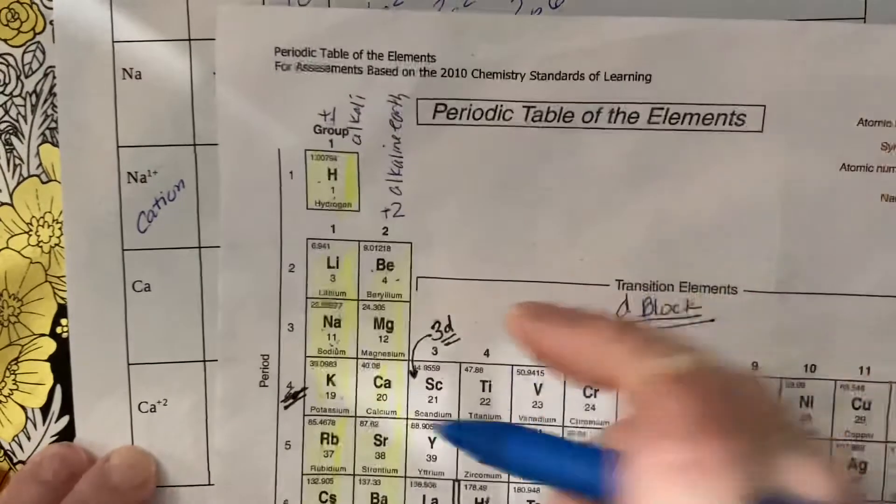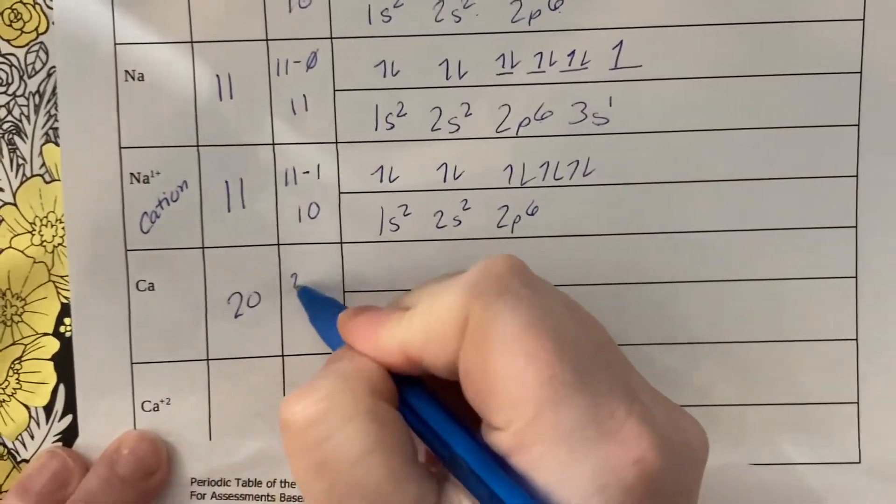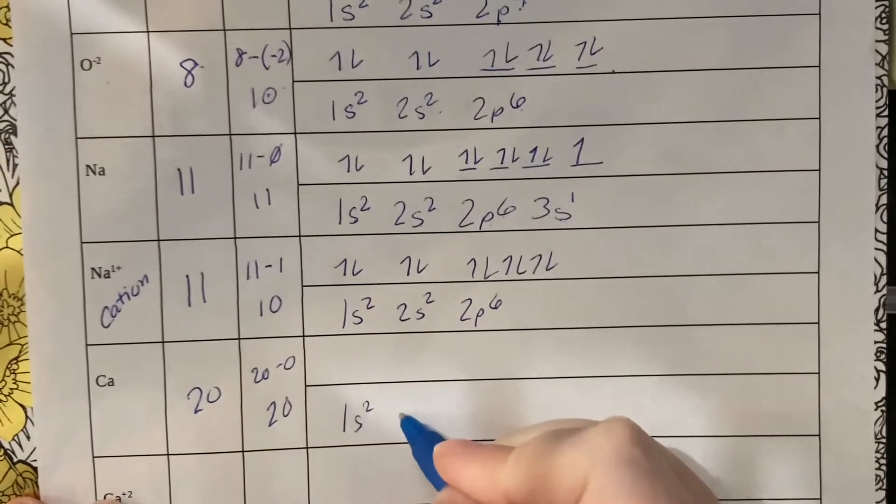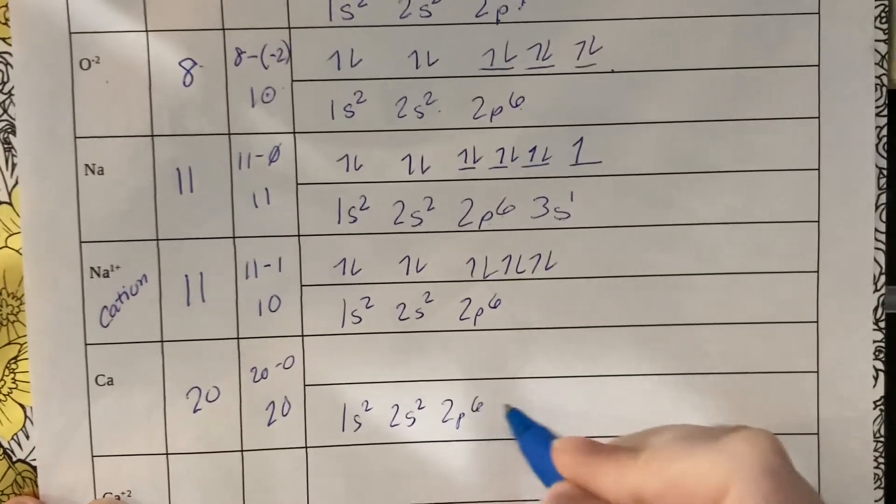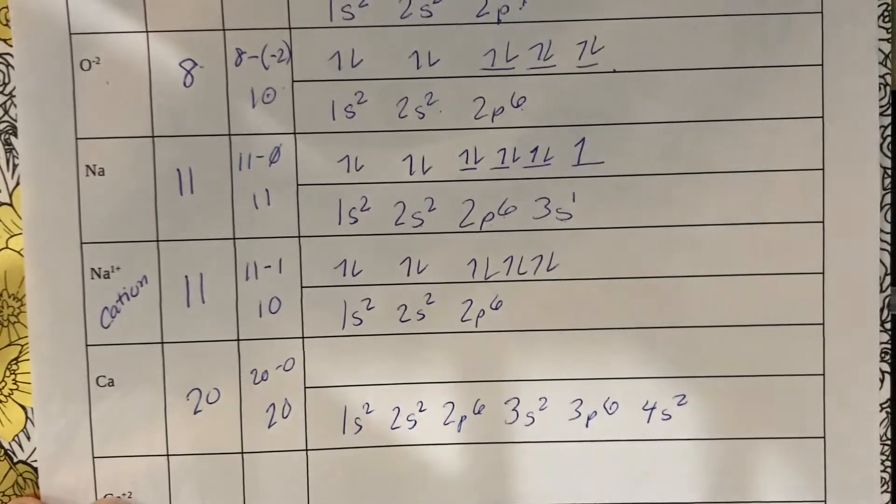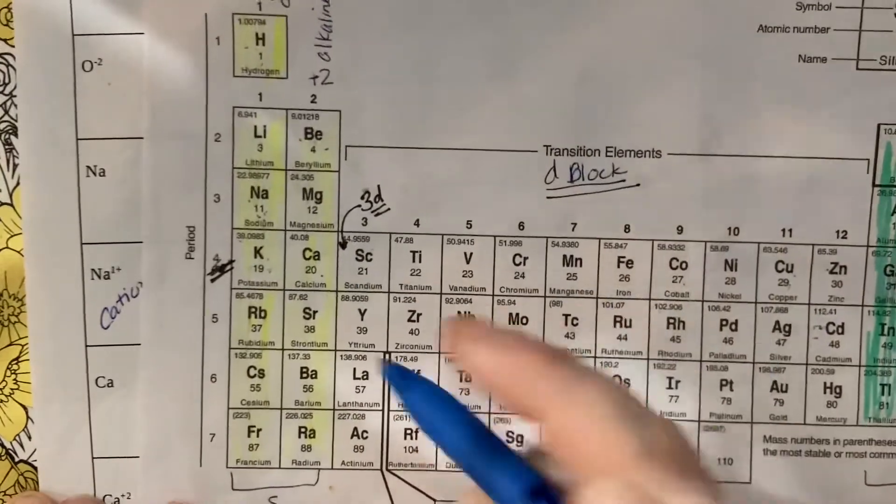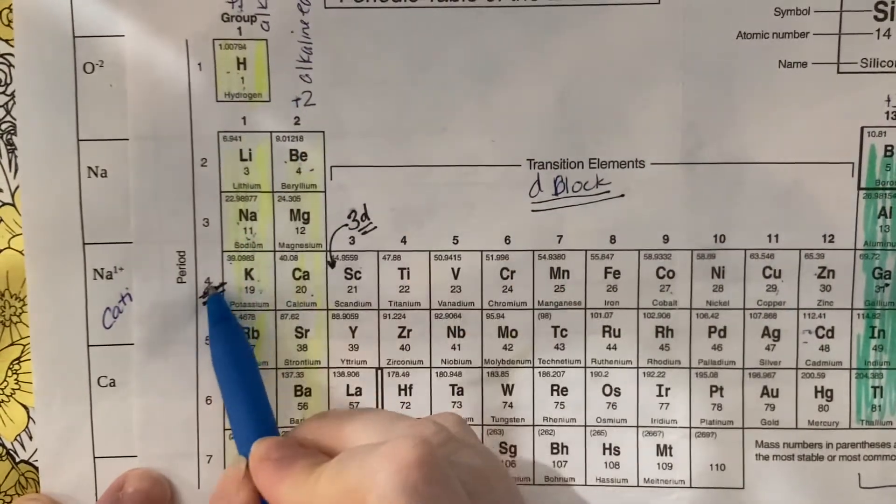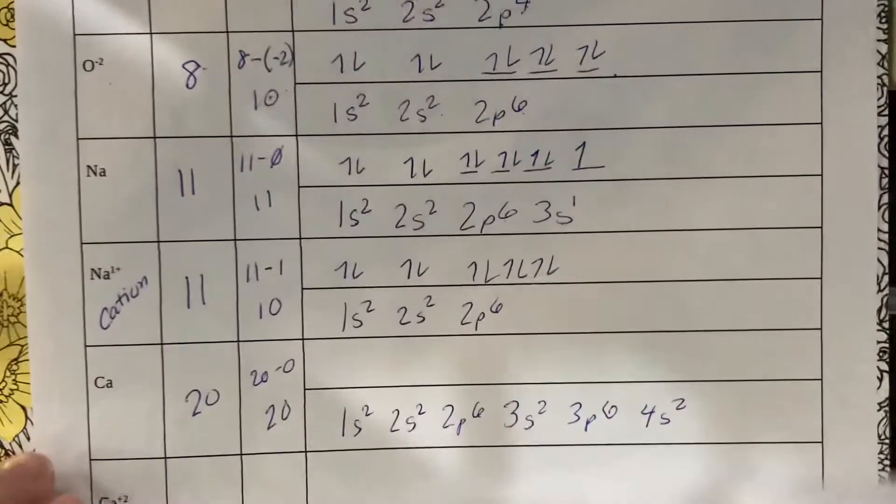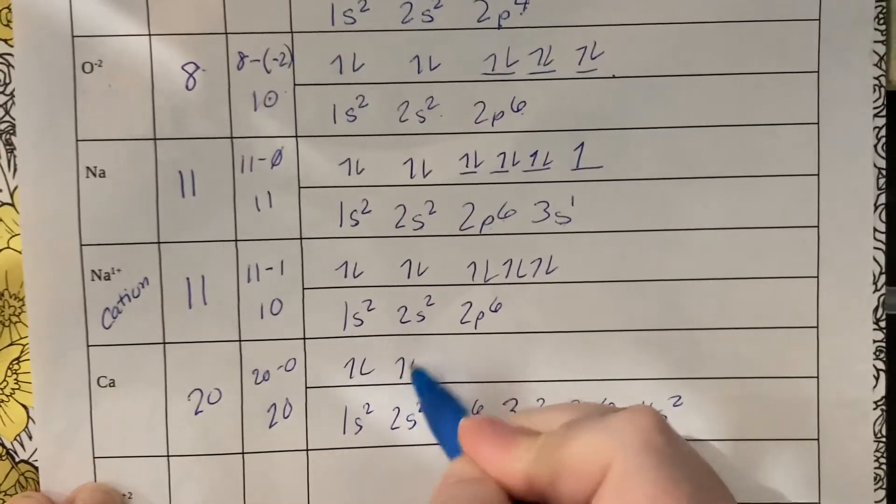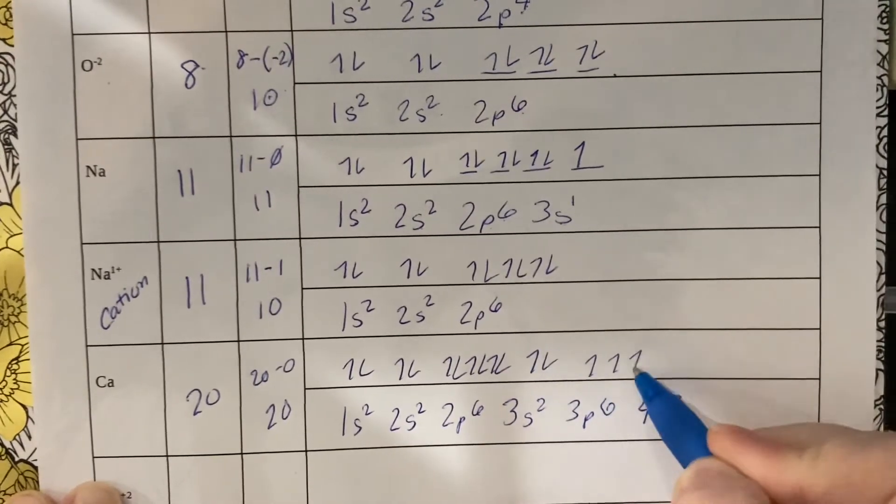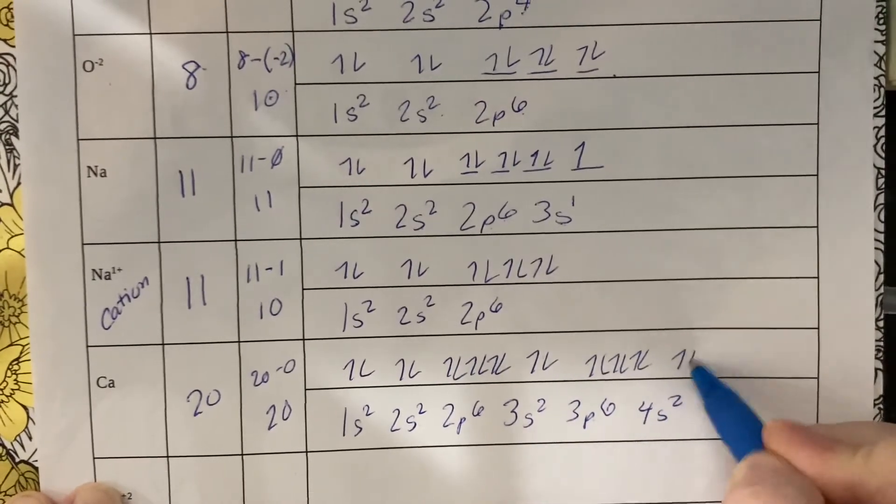Calcium is over here, number twenty. Twenty minus zero is twenty. 1s² 2s² 2p⁶ 3s² 3p⁶ 4s². Remember you always look at where he is on the chart, so his last bit is four and two s's, 4s². That's the last row.